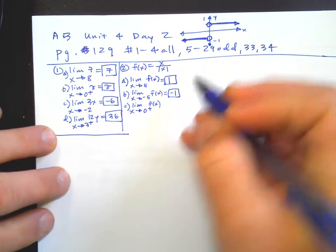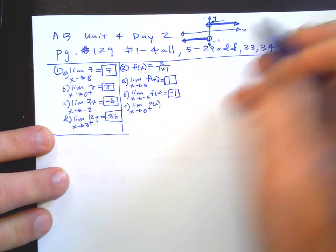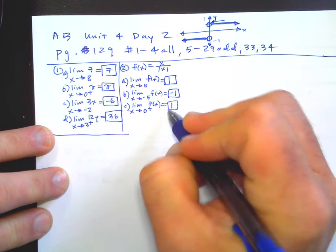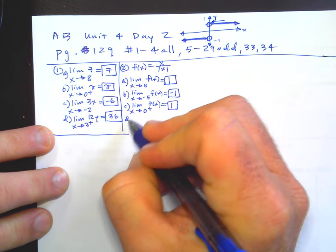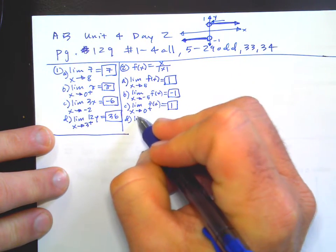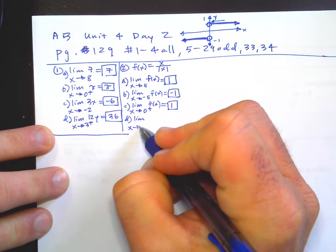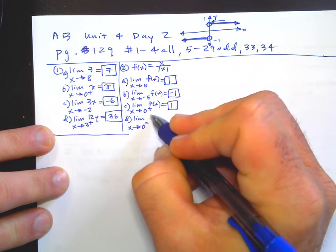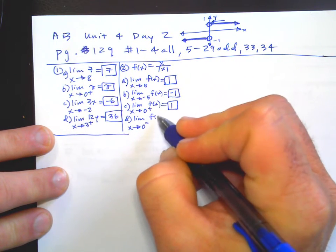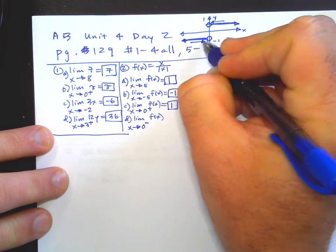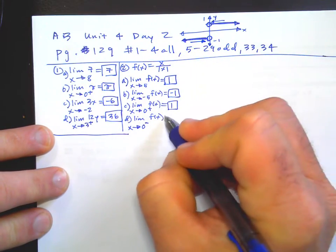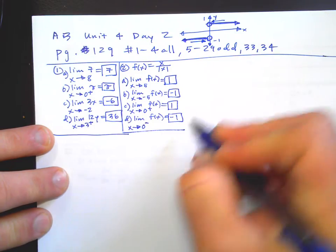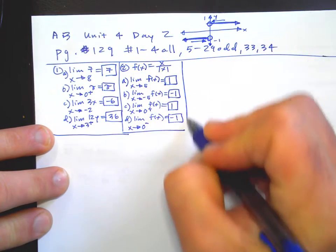As you approach zero from the right side, you can see that it's approaching positive one. And part D: as X approaches zero from the left side, it's approaching negative one. Kind of interesting.